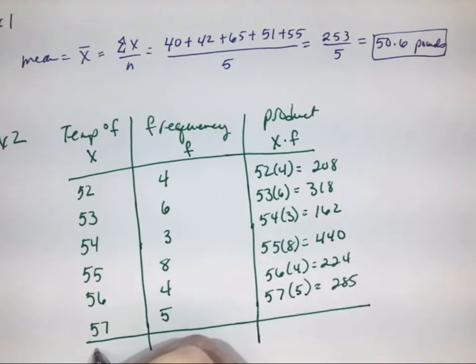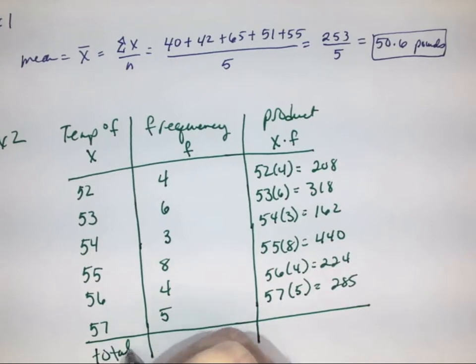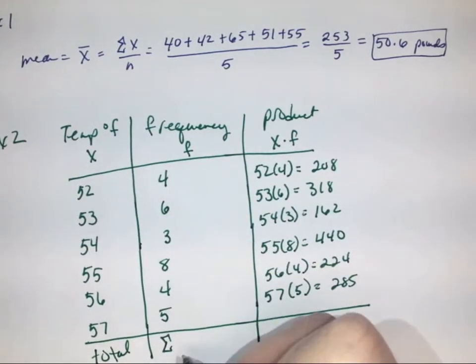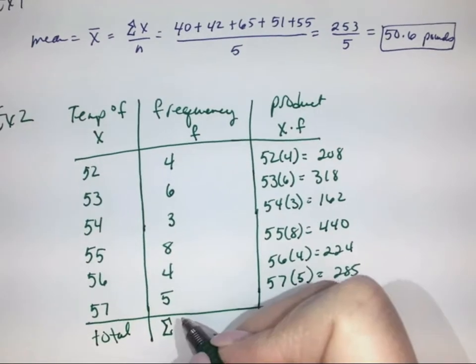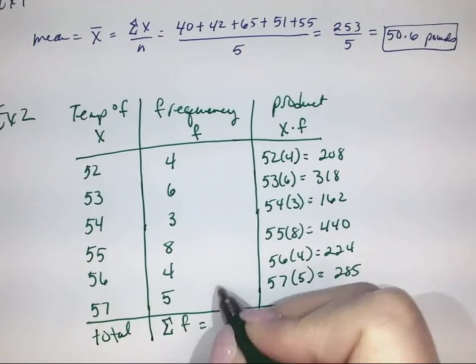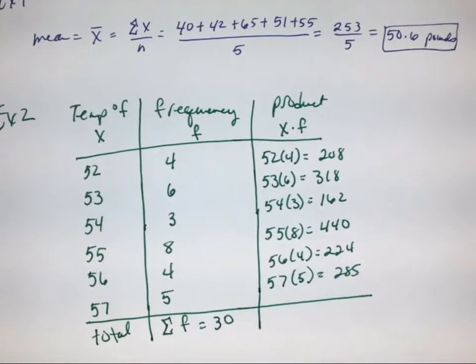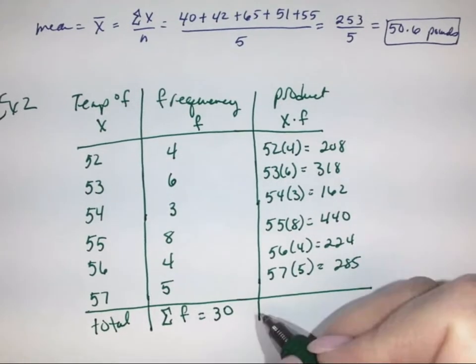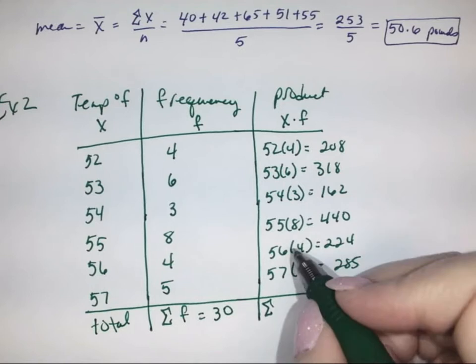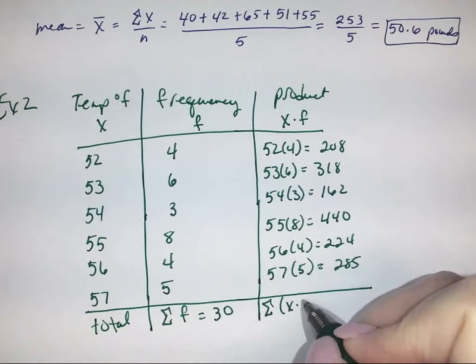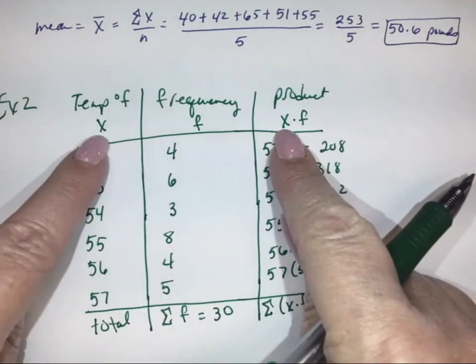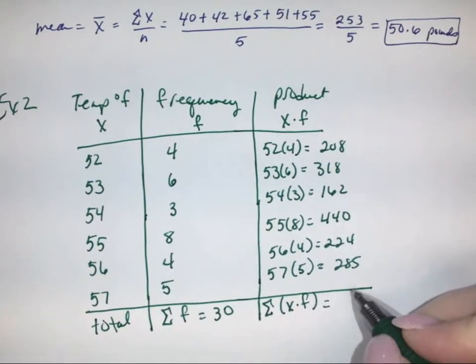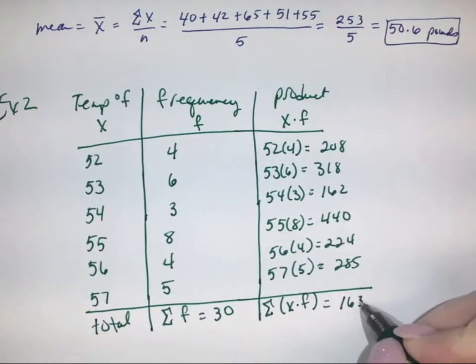We're looking at finding the totals. When we add all of these, this is the summation of our frequency. When we add those, we get 30, which is what we should get because they did it for 30 days. This will be the summation of our x times f. When we add all those values, we get 1637.